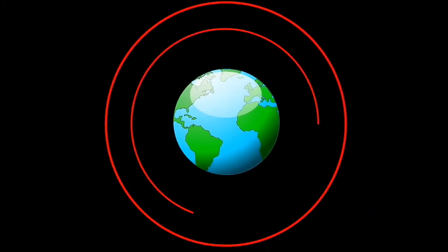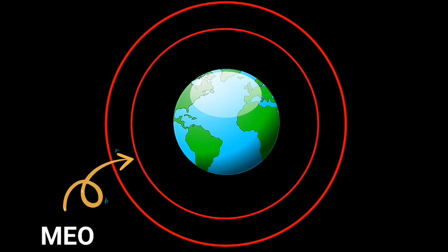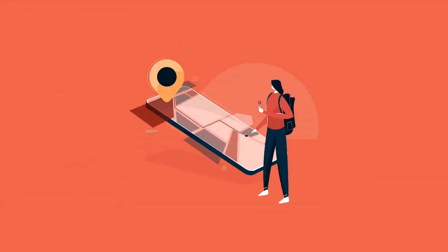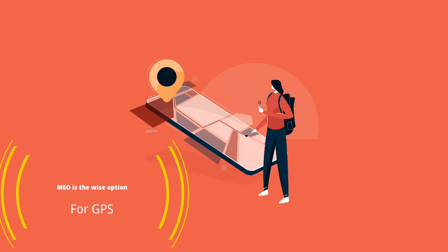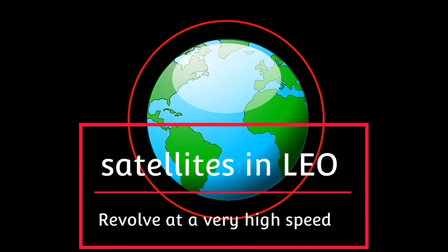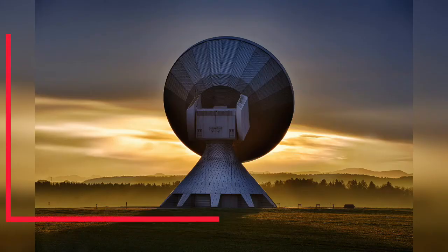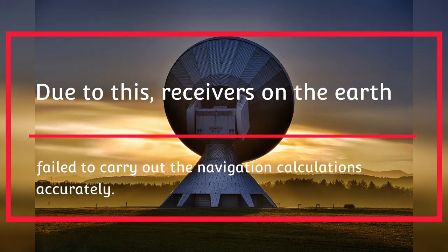Before talking about the geosynchronous orbit, let's talk about the medium Earth orbit. For navigation applications, such as GPS, MEO is the wise option. Even though LEO is the closest to the Earth, satellites in this orbit revolve at a very high speed. Due to this, receivers on the Earth fail to carry out the navigation calculations accurately.